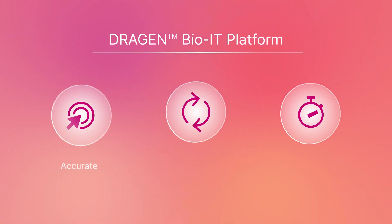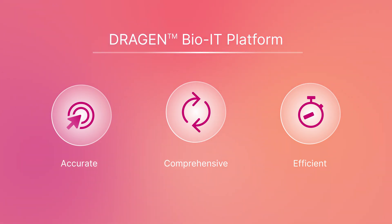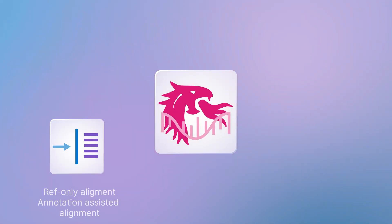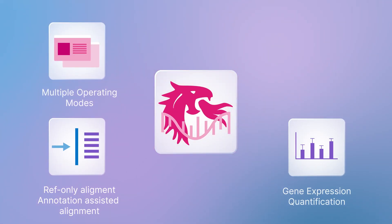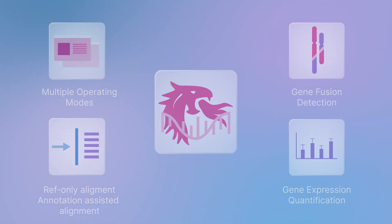Both platforms offer in-cloud access to the DRAGEN BioIT platform for accurate, ultra-rapid secondary analysis of RNAseq and other NGS data. The DRAGEN RNA app offers multiple operating modes, including reference-only alignment and annotation-assisted alignment, with gene fusion detection and gene expression quantification.